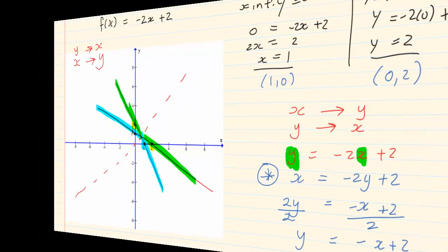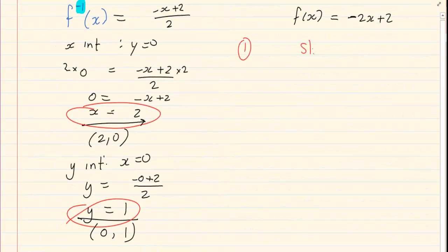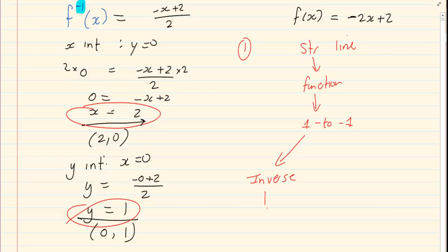Now what did we conclude from this? A straight line is a function. But more interesting, it is a 1 to 1. If it is a 1 to 1, then we know its inverse is also a function. The inverse is also a function.